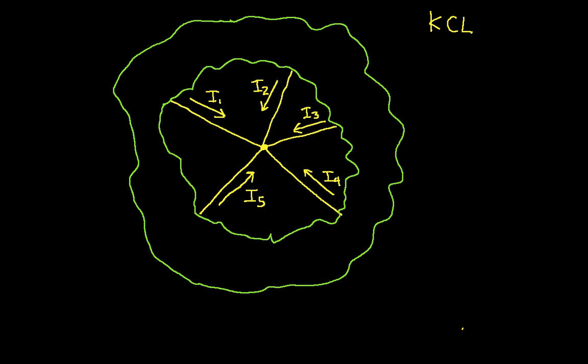We'll start the explanation by looking at this diagram that I've drawn here. This is a node in some circuit, and the green stuff is what we would call the rest of the circuit. For Kirchhoff's Current Law, we don't even care what the rest of the circuit is.